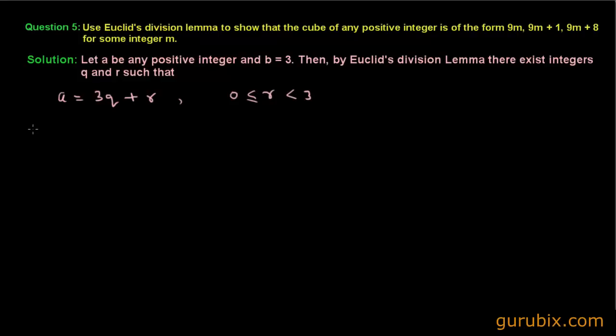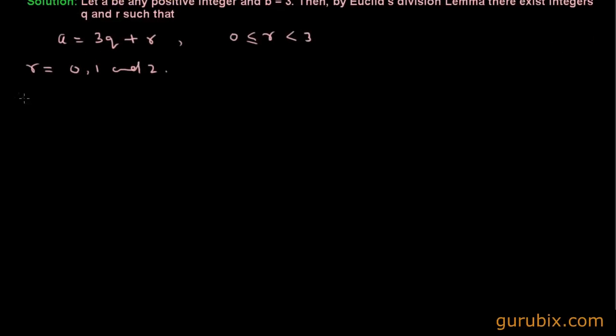Then what are the possible values of r? Definitely r will be equal to 0, 1, and 2. So a is of the form 3q, 3q plus 1, or 3q plus 2. Therefore, we have three cases.